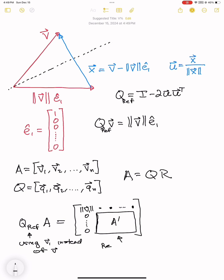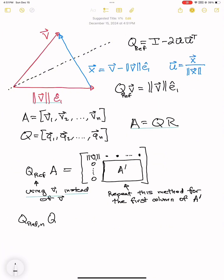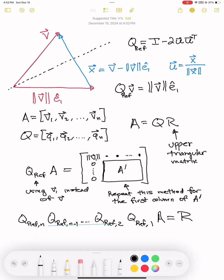This leaves behind non-zero entries in the first row and a submatrix A'. If we apply this householder reflection approach to A' and do this recursively, we end up with an upper triangular matrix R. The resulting sequence of householder reflections gives us Q-transpose.